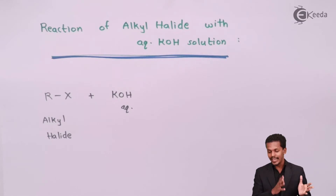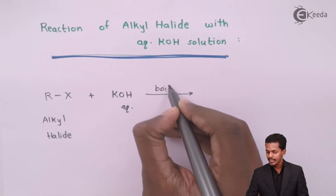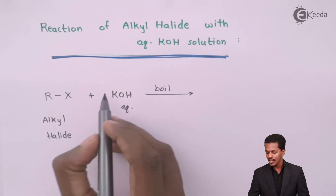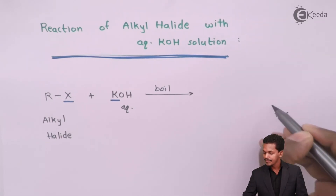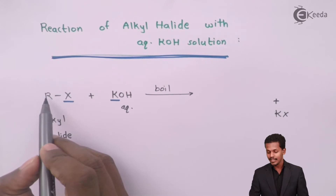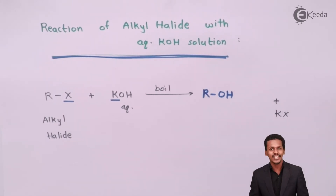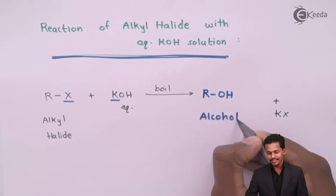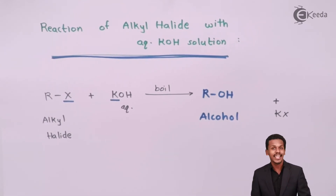Specifically, the reaction of alkyl halide with aqueous KOH solution is a substitution reaction where we take the alkyl halide along with potassium hydroxide and boil it. The potassium atom along with the halogen atom X is removed as a byproduct in the form of KX. The remaining alkyl group R and the OH group combine to form an alcohol. So whenever an alkyl halide is treated with aqueous KOH and boiled, the product is an alcohol and KX as a byproduct.